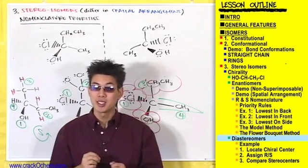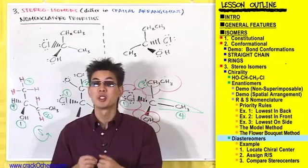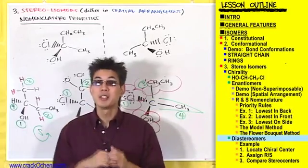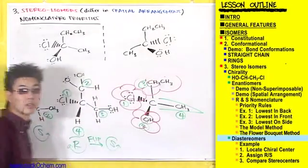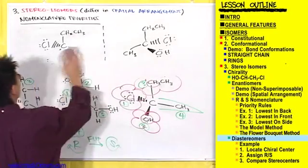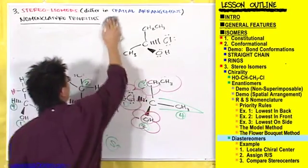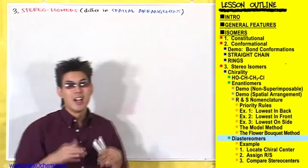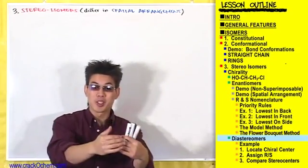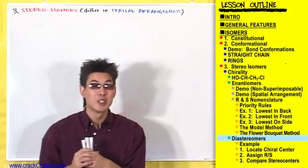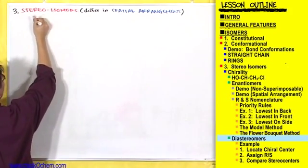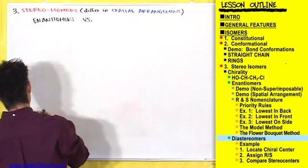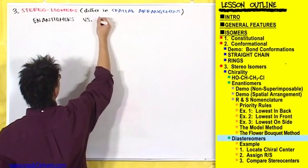When you have multiple chiral centers, that means you can have multiple stereoisomers within one compound — multiple places where a compound can be R or S. Now let's compare enantiomers to diastereomers.